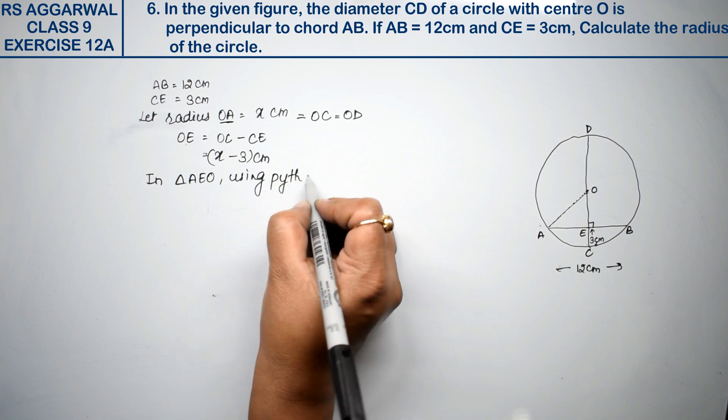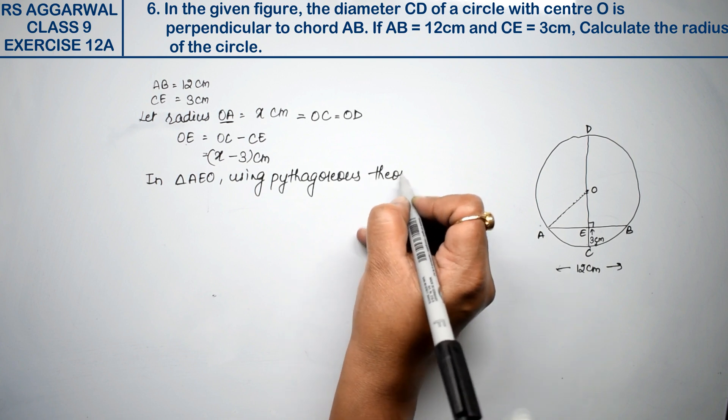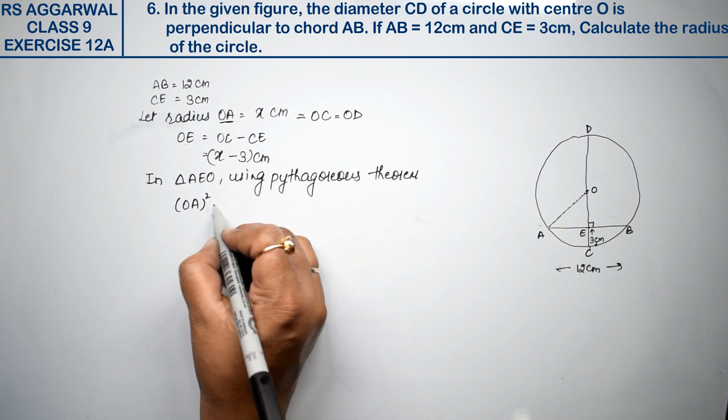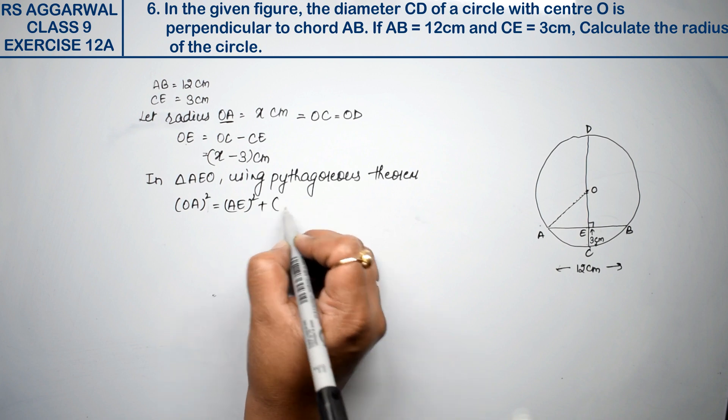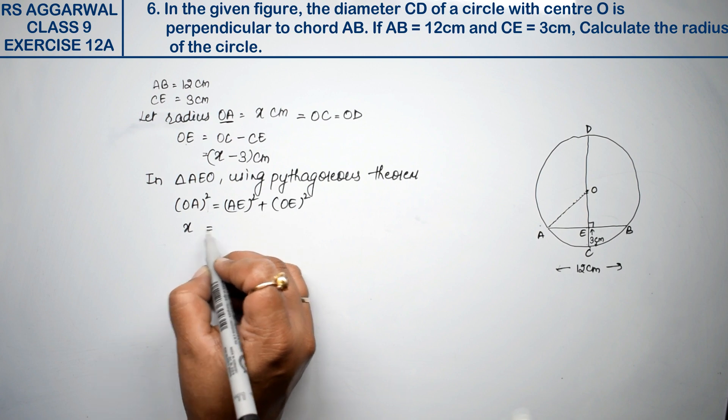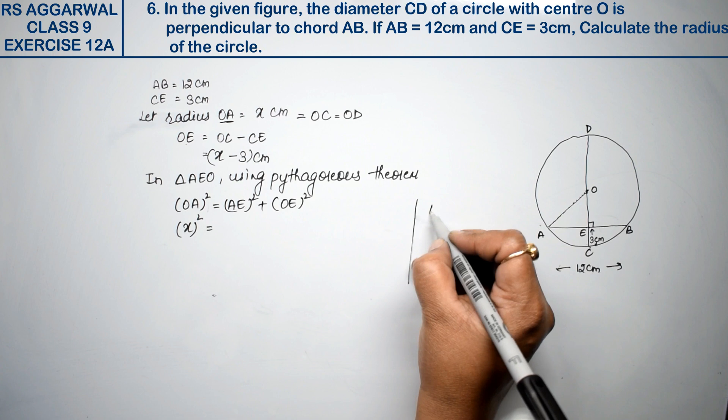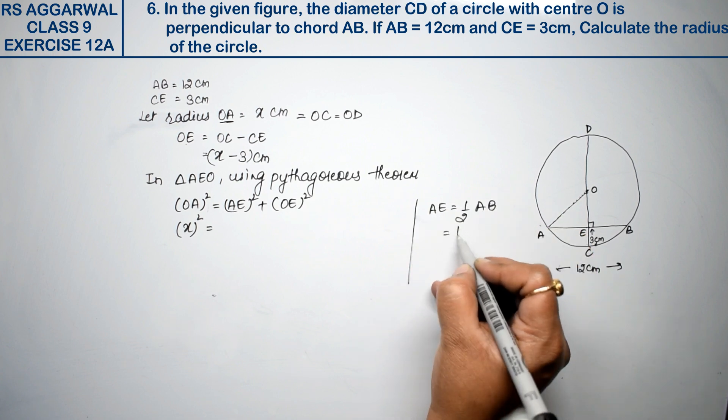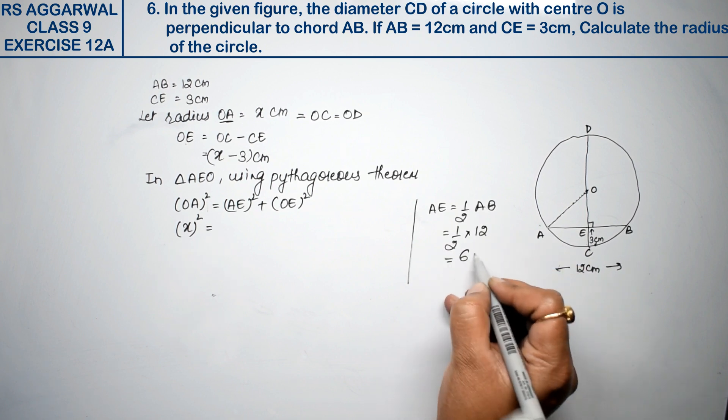So, using Pythagoras theorem, look, Pythagoras theorem: OA whole square equals to AE whole square plus OE whole square. OE how much was it? And AE how much was it? AE how much was it? Half of AB, so half, AE was how much? 12 cm, so this is 6 cm.